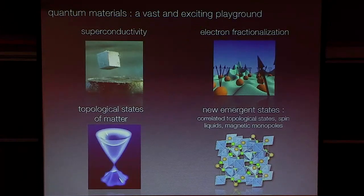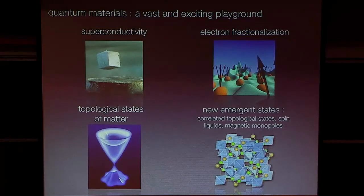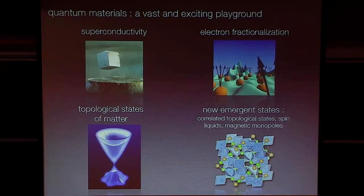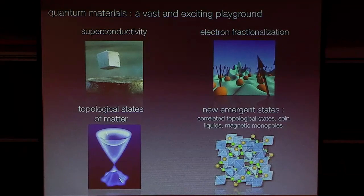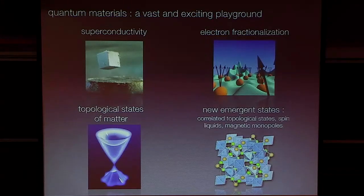It doesn't look like we're done yet — there's a lot of unexplored territory yet to be discovered. A lot of theoretical proposals, many of which actually originate from work here at Santa Barbara, in the groups of Leon Balents, Matthew Fisher, and Xiao-Gang Wen, proposing new correlated topological states, different kinds of spin liquids, emergent magnetic monopoles, and things like that. So there's a lot of things still yet to be discovered that makes this field so rich and exciting.